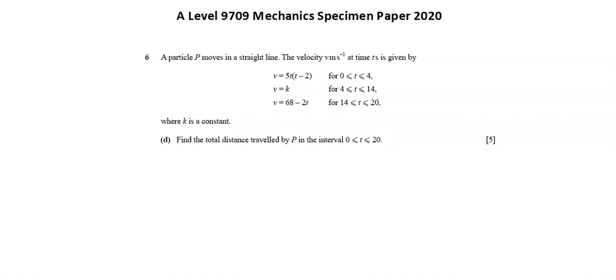For D, total distance, we want to find the area under the curve in the velocity time graph. As this is distance as opposed to displacement, we need to treat all areas as positive. So if we look at a sketch of our graph, we have our parabola, then a straight line, then a downward sloping diagonal line.